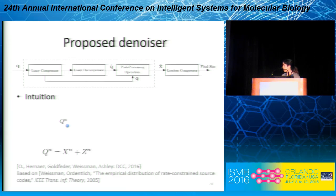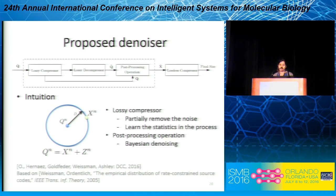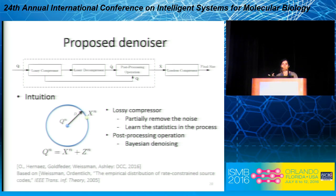We were able to propose the first denoising scheme in the literature for quality scores. The idea is to use a lossy compressor followed by a lossy decompressor to get reconstructed quality scores Q-hat, and then apply a post-processing operation that uses the original quality scores and the reconstructed ones to output the denoised values. To get the final compressed size, you apply a lossless compressor at the end. The quality score sequences Q are composed of the true quality scores X_m, which are not available to us, plus some noise C_n. By applying a lossy compressor at distortion D, you get a reconstruction sequence, and by choosing the right distortion metric and level, this reconstruction could actually be the true quality scores X_m.